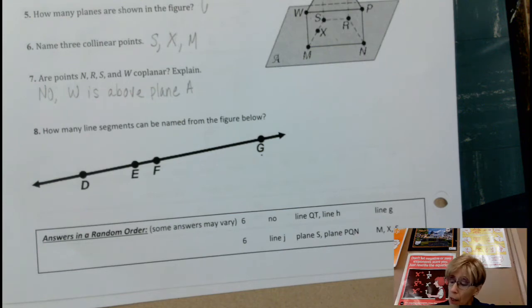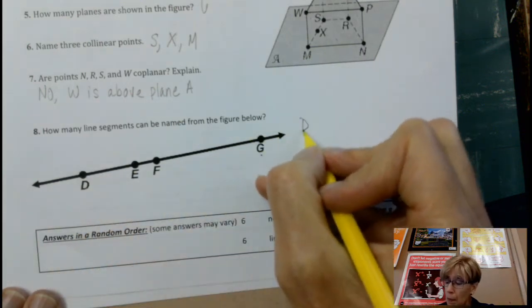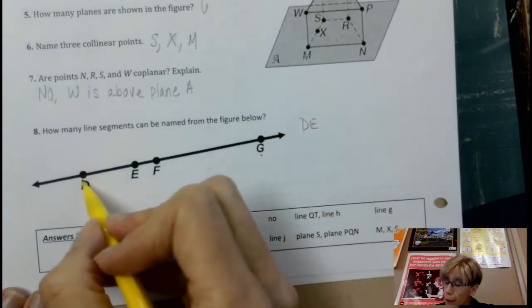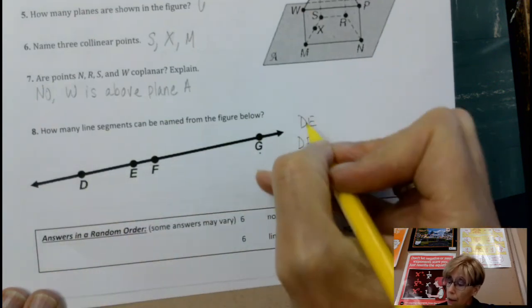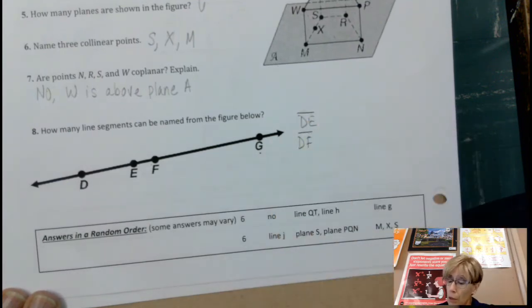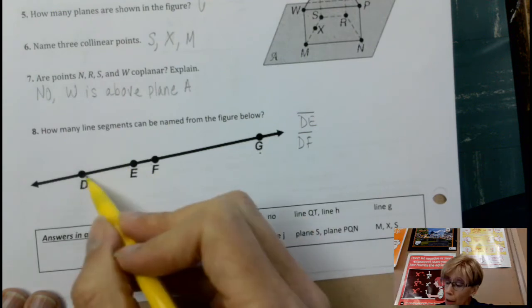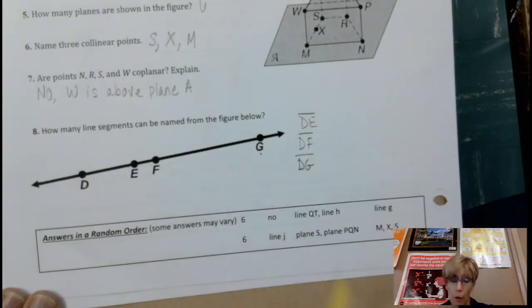So we already had that one. I'm trying to list them down. So then what we've got really is we've got E F, and E G, and F G. There we go.